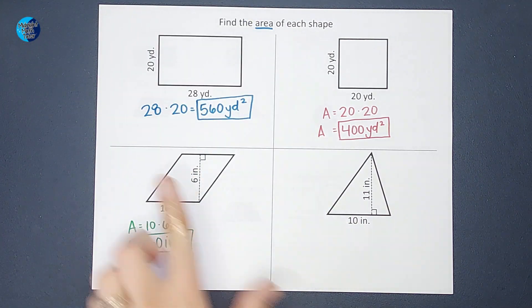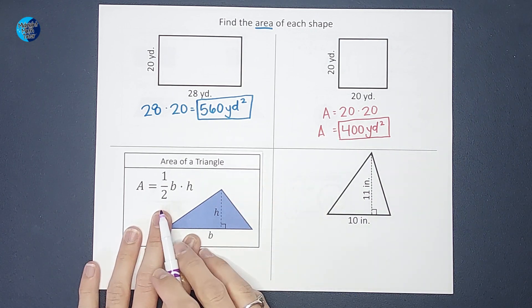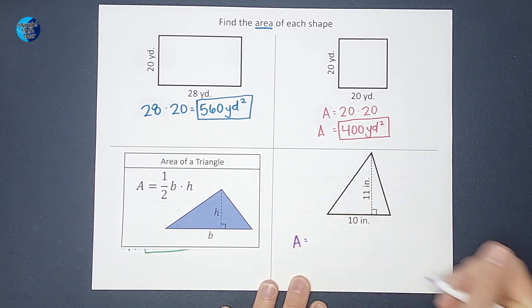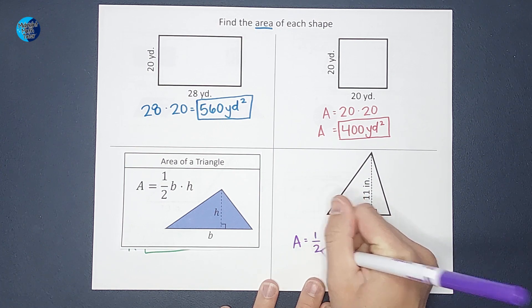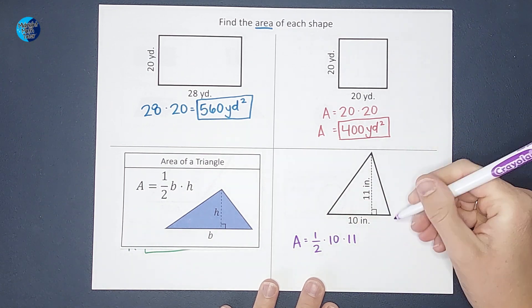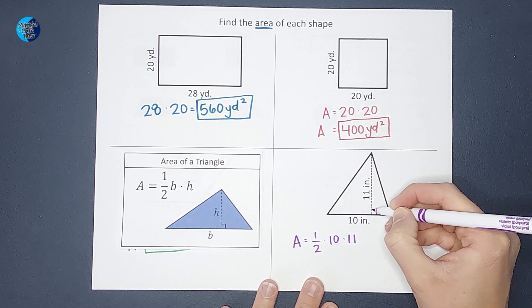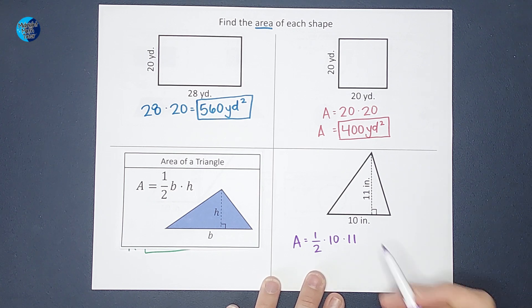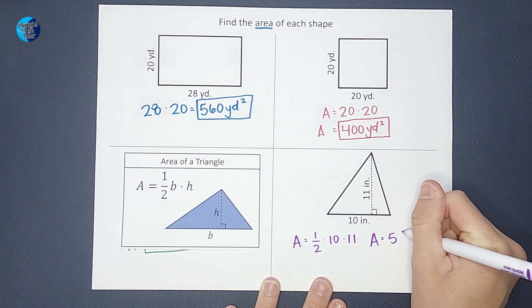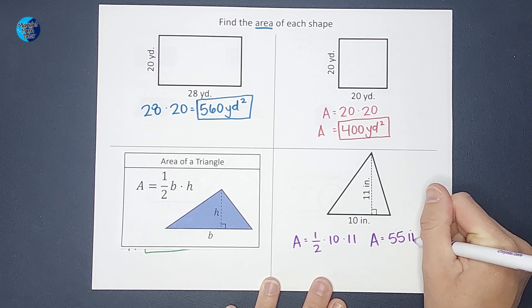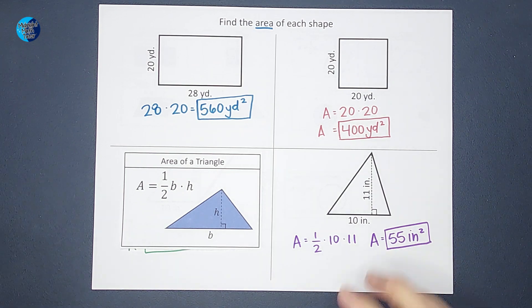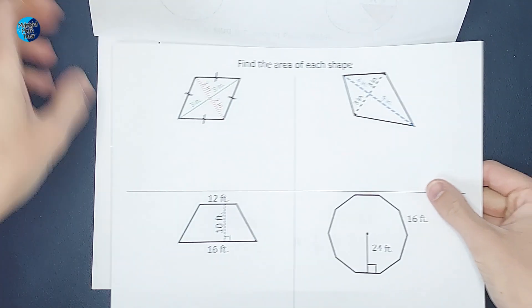My next example is a triangle. This one is similar but not exactly the same — the area of a triangle is one-half times the base times the height. So the area is one-half times the base of 10 times the height of 11. Again, the height is not the slanted measure; it goes from bottom to top at a right angle. One-half times 10 gives me 5, and 5 times 11 gives me 55 inches squared.